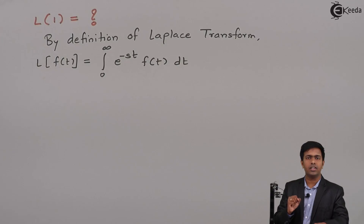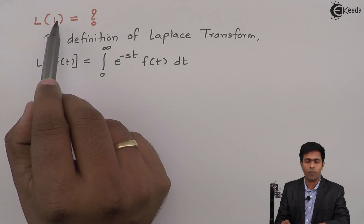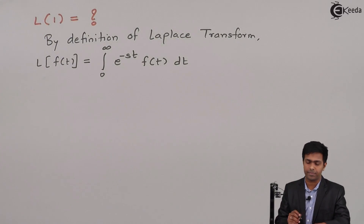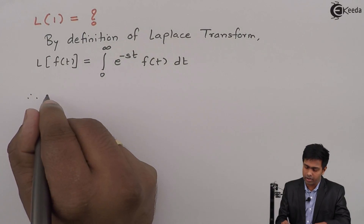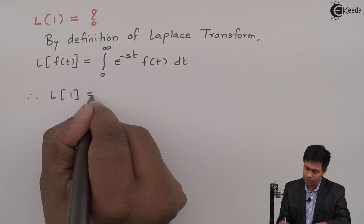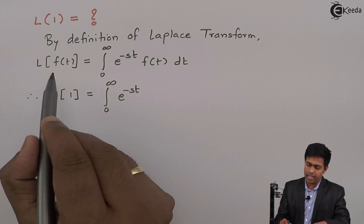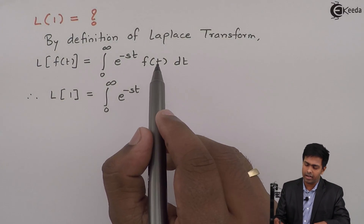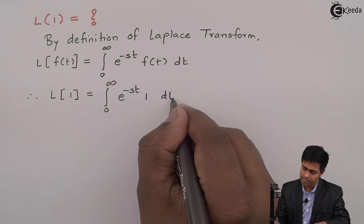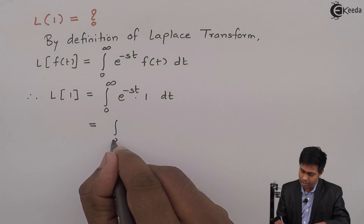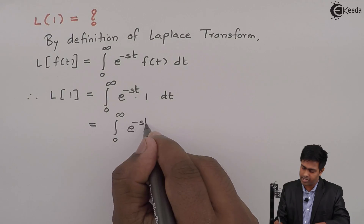Let us use this definition to find out the Laplace transform of 1. If we compare the function Laplace of 1 with Laplace of f(t), then we can say that f(t) is equal to 1. Therefore, we will get: Laplace of 1 equals integration from 0 to infinity of e raised to minus st, and since f(t) is 1, that becomes e raised to minus st into 1, which is simply e raised to minus st dt.